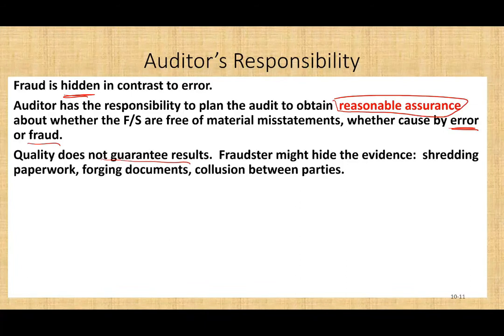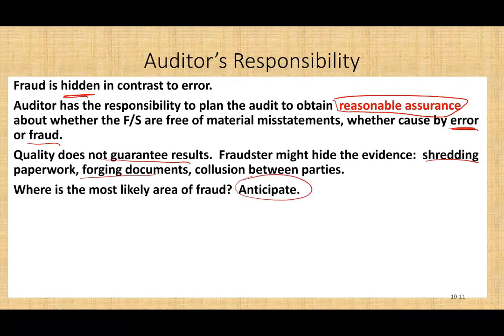Now, if we're looking specifically for fraud, then it's different. But if we're conducting the audit, we only provide reasonable assurance when it comes to fraud. Why? Fraud perpetrators might hide evidence — they could shred documents, forge documents. And the hardest thing with fraud is when you have more than one party colluding with each other. So what is our job as auditors? Our job is to anticipate what is the most likely place that fraud could occur. That's why we study internal controls, because based on internal controls we can see weaknesses in the system, and if we see those weaknesses we can predict where fraud can potentially take place.